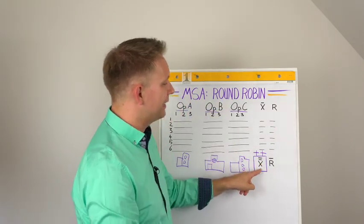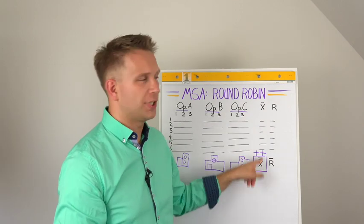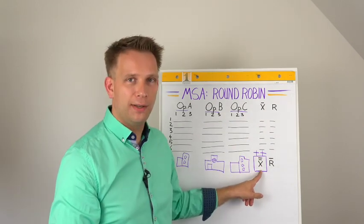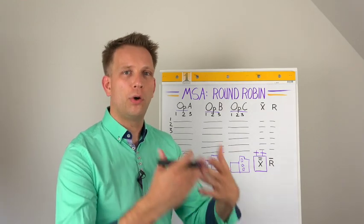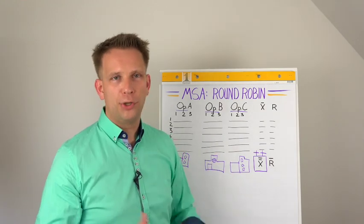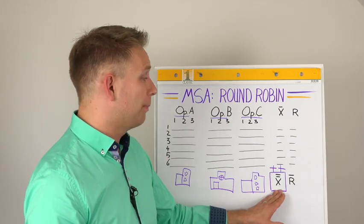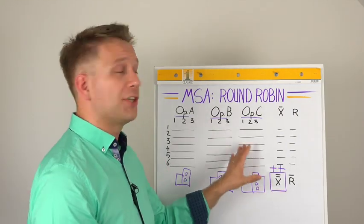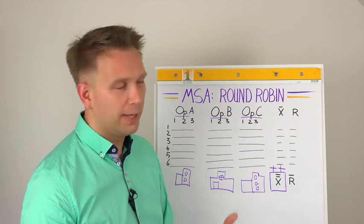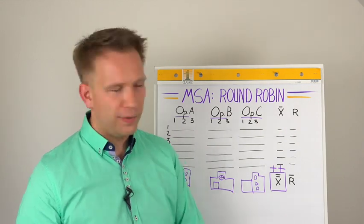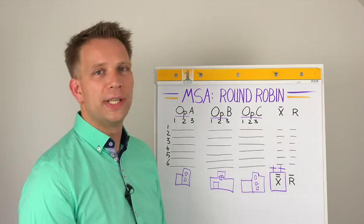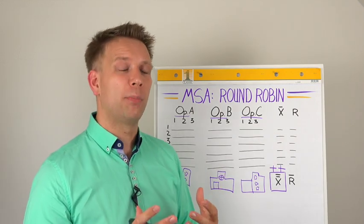These are the correct answers and you check each laboratory how far they are off this standard certified laboratory. This can by the way also be done for a gauge R&R; the same mathematics apply, but usually you do not have the golden standard in your factory. So that's why you do this type of comparison between the operators.